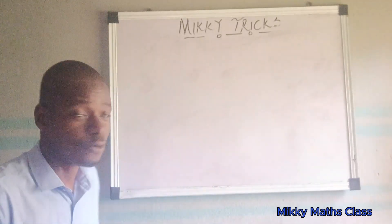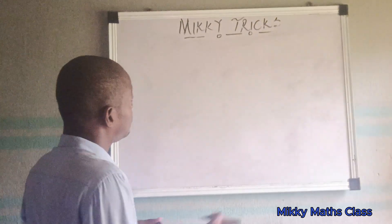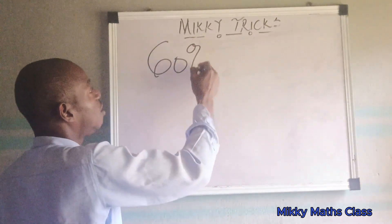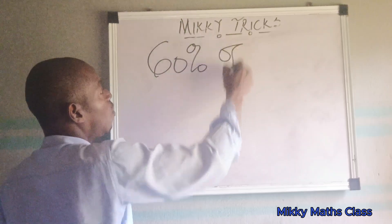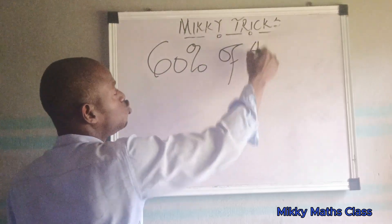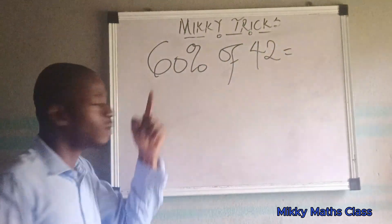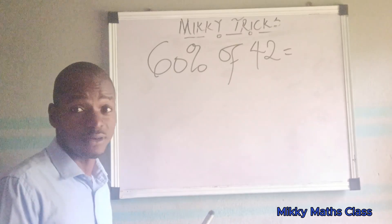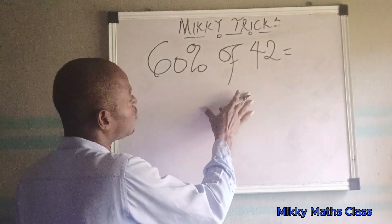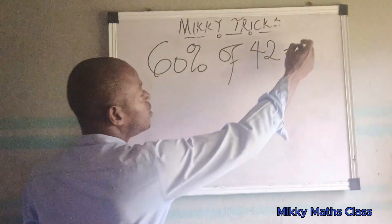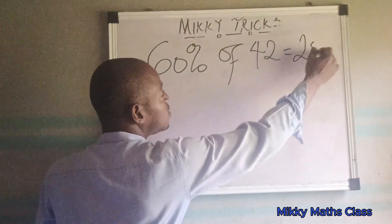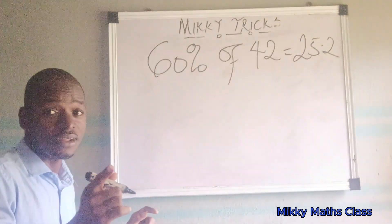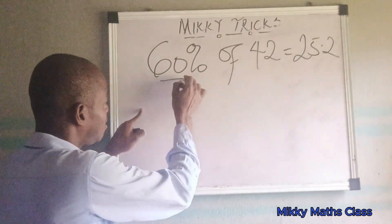How do I quickly figure out percentage questions without a calculator? For example: 60% of 42. The answer is 25.2. Let me show you how I arrived at that.